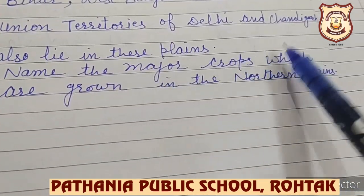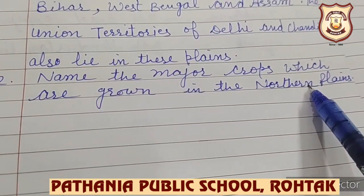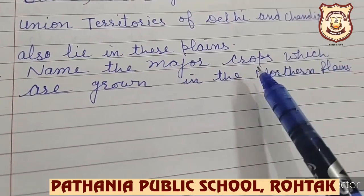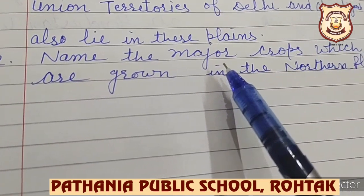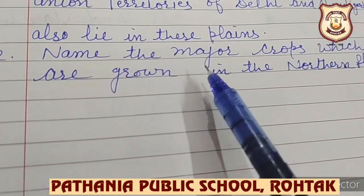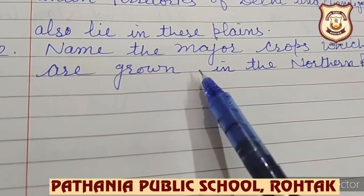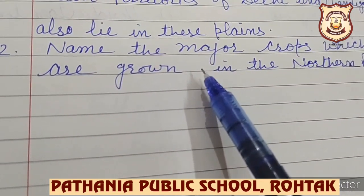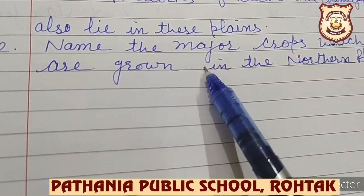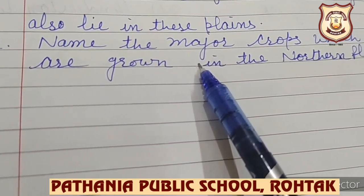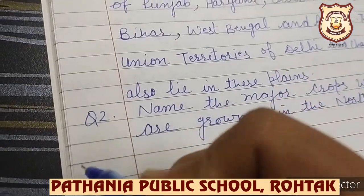Next question: name the major crops which are grown in the Northern Plains. As you know, the land is very fertile here because the rivers originating from the mountains bring sand, silt, and clay with them. The fine silt is called alluvium, and this alluvium is very fertile and is deposited in the Northern Plains. So let us write answer number 2.